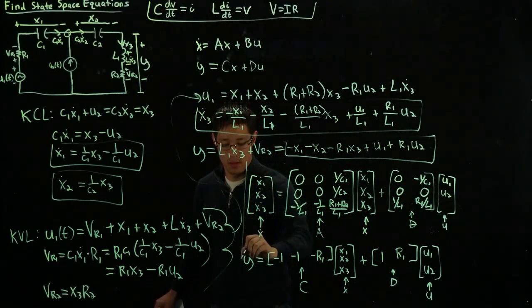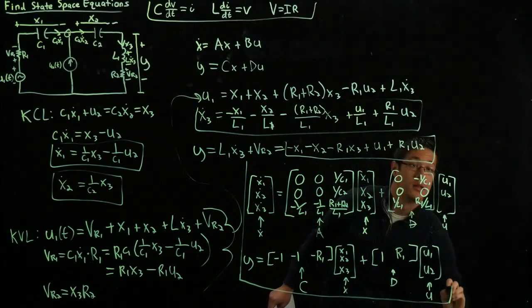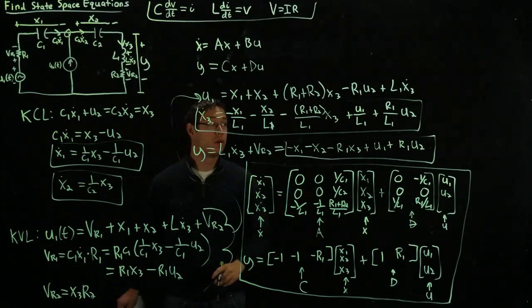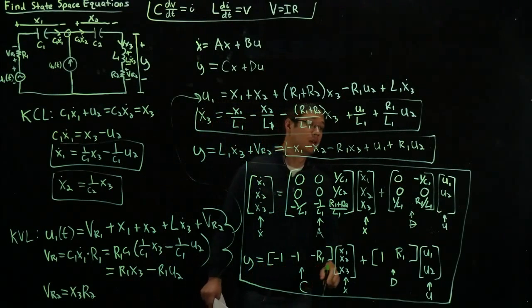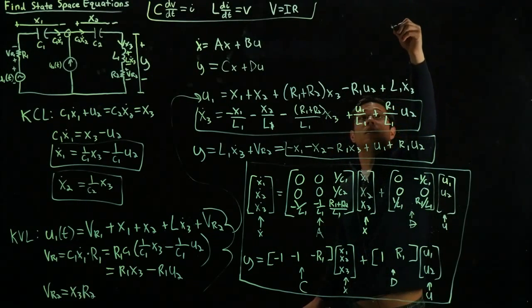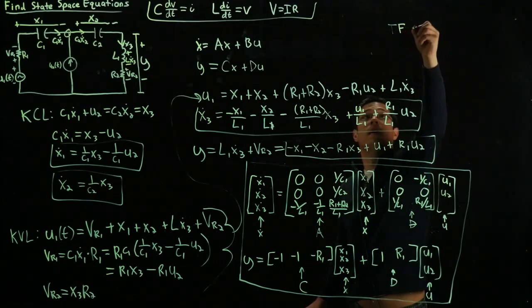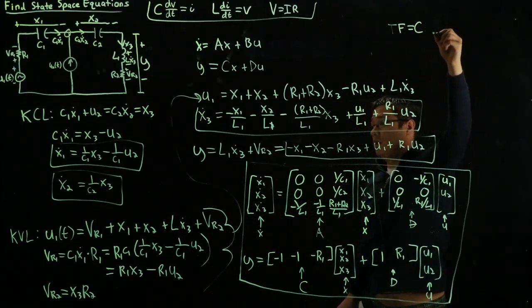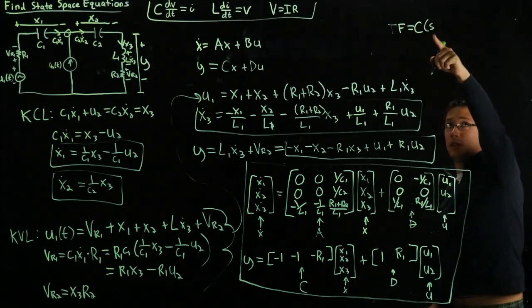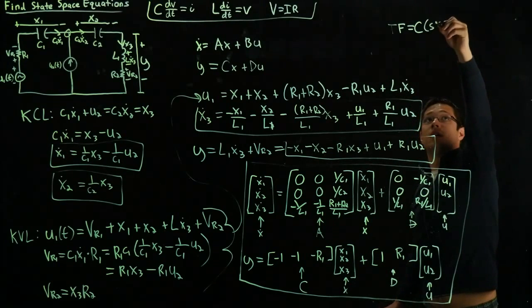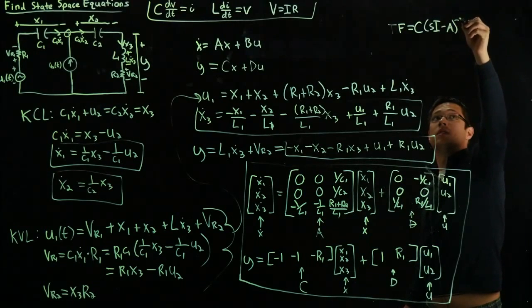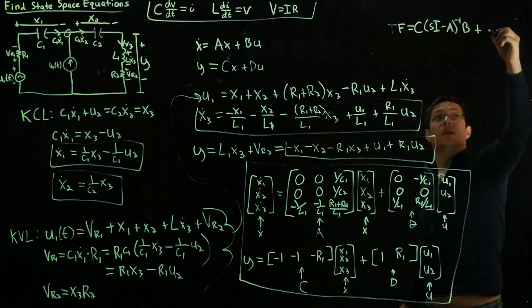So here we are. We have written our state-space equations. Now, once we have these state-space equations, we can actually easily write the transfer function, if you're using a computer, that is, by this. The transfer function equals C times s, that's s in the Laplace domain, times I, the identity matrix, minus A inverse, times matrix B, plus D.